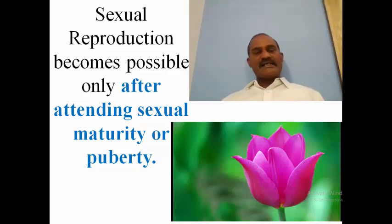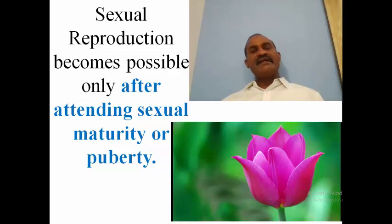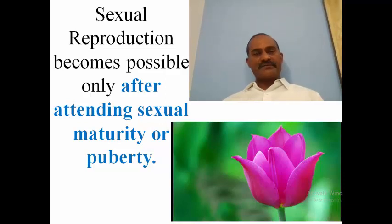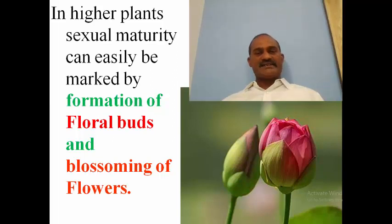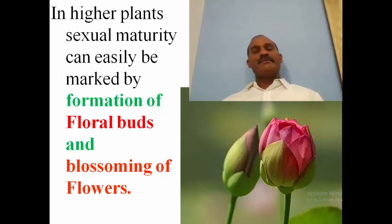Sexual reproduction becomes possible only after attaining sexual maturity or puberty. As far as growth is concerned, it is completed in two phases: the first is vegetative growth and the second is reproductive growth. Once the plant completes vegetative growth, it is available for reproductive growth. In higher plants, sexual maturity can easily be recognized by the formation of floral buds and blossoming of the flower.